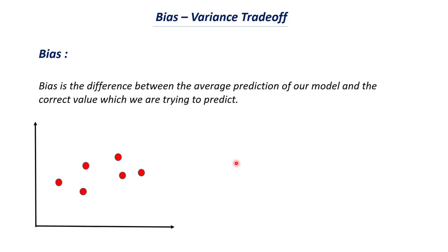Before going into bias-variance trade-off, we need to understand what is meant by bias and what is meant by variance. This is the formal definition of bias: bias is the difference between the average prediction of our model and the correct value which we are trying to predict. It is the difference between two values — the prediction made by our model and the actual value. So let's try to understand this with an example.